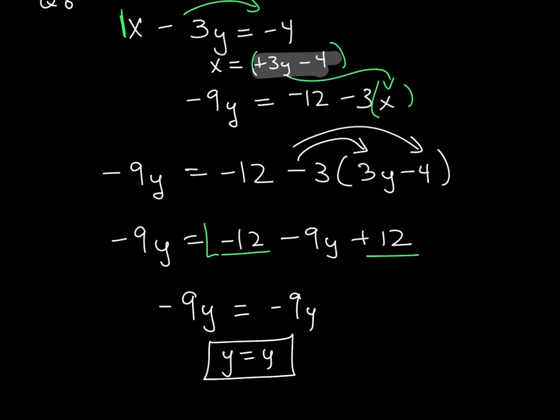This is an example of an infinite number of solutions, because what I'm talking about here is two lines that are right on top of each other. So this is an example of when you would get an infinite number of solutions.